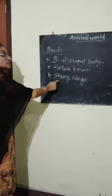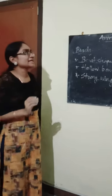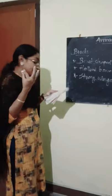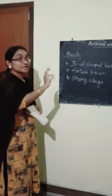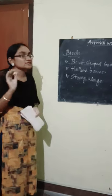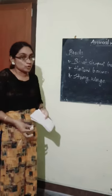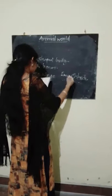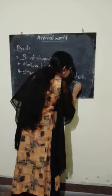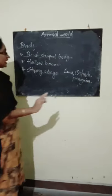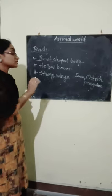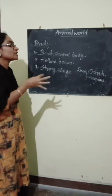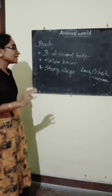If they want to fly, they need strong wings. Some birds are not flying — like penguins, ostrich, and emu. These birds are not flying because their wings are very weak and their body has much weight. That is why birds like emu, ostrich, and penguins are not flying.